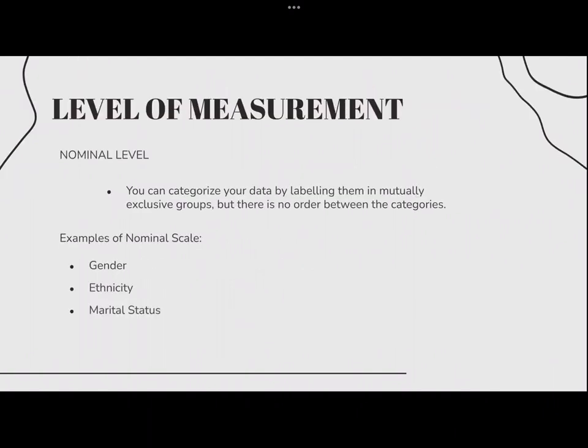Now let's proceed to the levels of measurement. First, we have the nominal level, where you can categorize your data by labeling them in mutually exclusive groups, but there is no order between the categories. For example, gender, ethnicity, and marital status.